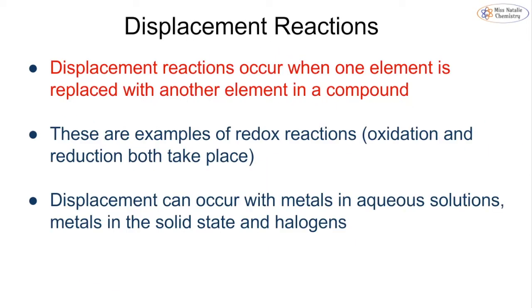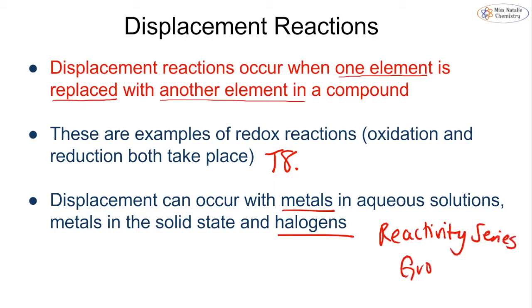You also need to recognize a displacement reaction. A displacement reaction is happening when we have one element replacing the atoms of another element in a compound. We can have a redox reaction happening where we get oxidation and reduction, which will be discussed more in topic eight. Displacement can happen with metals in aqueous solutions and also with halogens. You discussed these in GCSE when you did the reactivity series and group seven.